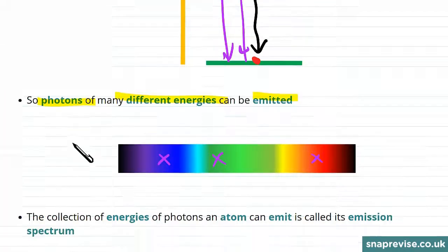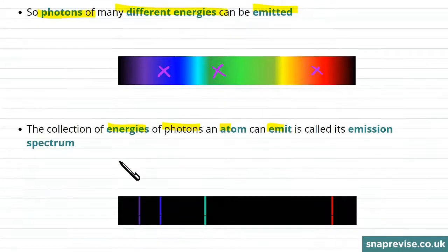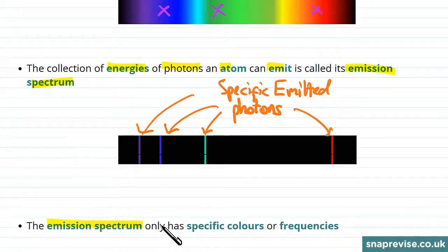All in all, there will be a collection of energies of photons that an atom can emit. This collection is called the emission spectrum. These are the specific energies of photons that the atom can emit, and we find that the emission spectrum only has specific colors or frequencies.